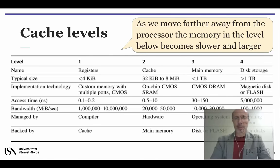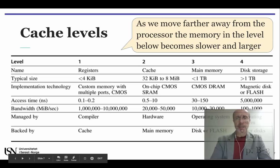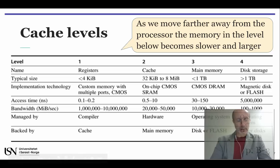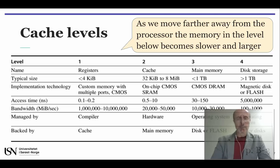Since we are talking about cache levels, I thought it would be interesting to show you this table that is included in Annex B of our book. It's a pretty general classification but it's very useful to understand the technical differences between the various cache levels. You may consider pausing the video and checking for yourself the differences from left to right as we move farther away from the CPU.